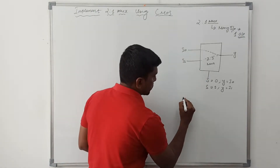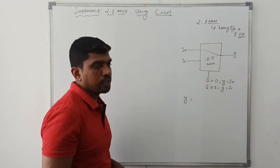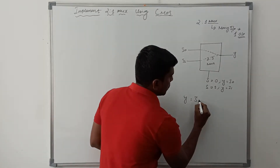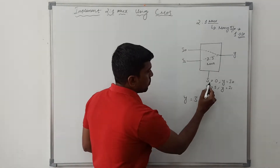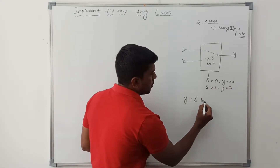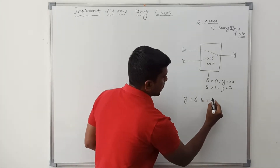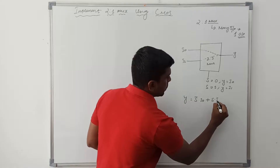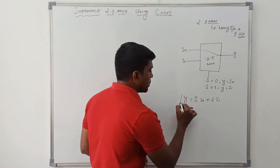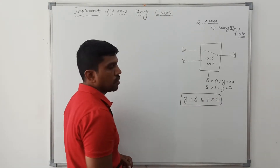Now I am going to write the Boolean expression for 2-to-1 mux. Y equals S-bar dot I0 plus S dot I1. If S equals 0, Y equals I0; if S equals 1, Y equals I1. So the Boolean expression for 2-to-1 mux is: Y = S̄·I0 + S·I1.